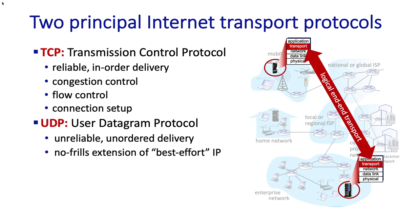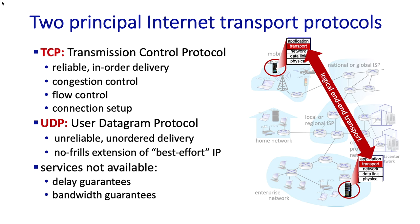These are the two principal internet transport protocols. It's worth thinking about the kinds of services that are not available through these protocols. For example, there is no service that guarantees the amount of time between when a message is sent into a socket and when it pops out the other end — which would be valuable for interactive voice applications like phone calls. Similarly, there's no service guaranteeing a specific amount of bandwidth between sender and receiver, such as a guaranteed megabits-per-second throughput for streamed video. Neither of these services is provided, and it's an interesting question why — it gets to the heart of what minimal services are needed for effective communication.